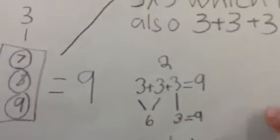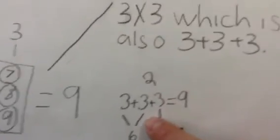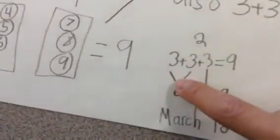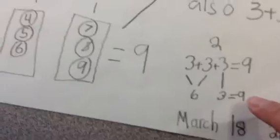And you can see that there are little lines. Let's show that 2 3s make 6. And then 6 plus 3 equals 9.